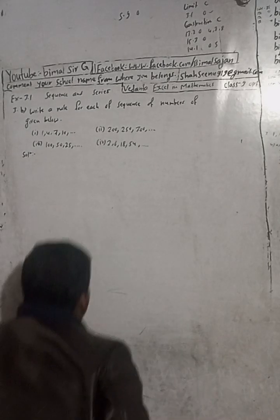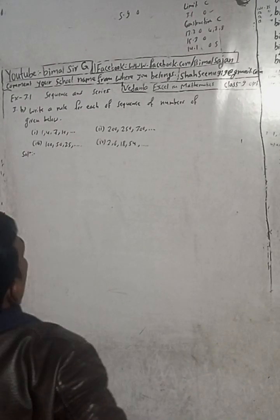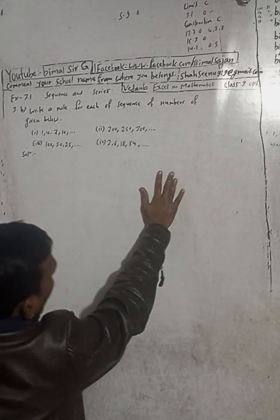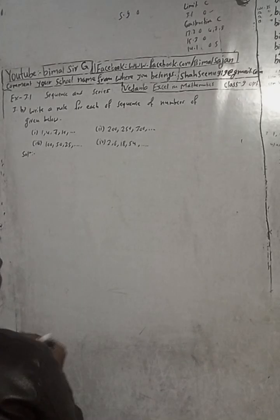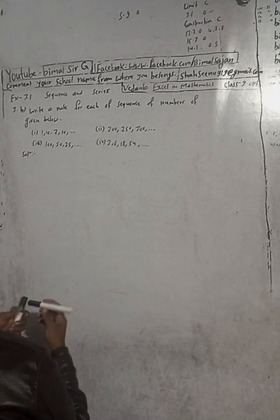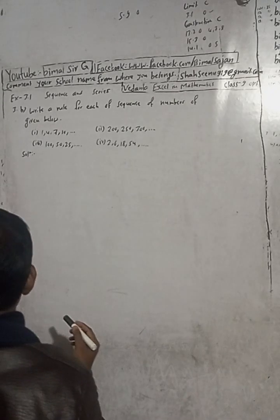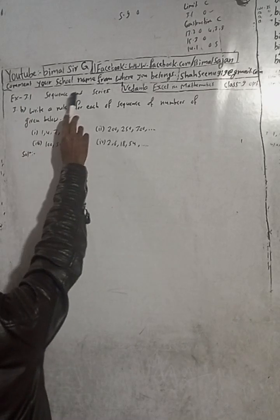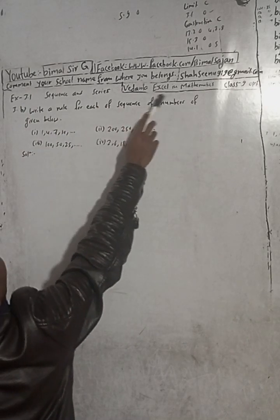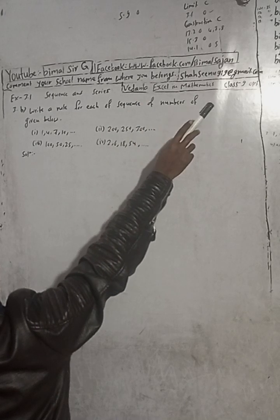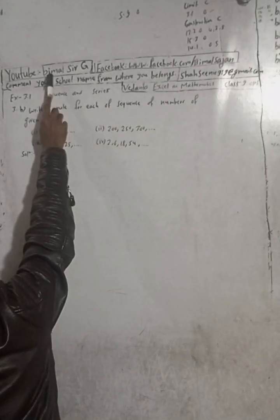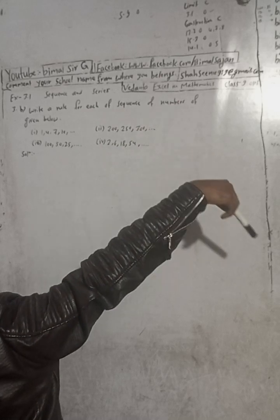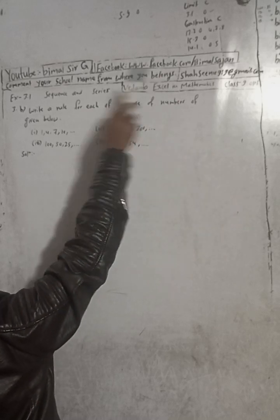Welcome back Class 9 Anthony students. In this cold season, I am here to warm up your days and nights with exciting content. Let's make it warmer with mathematical solutions of Class 9 and 10. This is question number 3B, Exercise 3.1 — Sequence and Series — from Vedanta Excel in Optional Mathematics Class 9. Don't forget to check the playlist; here you will get a lot of solutions. This is a demanded question.